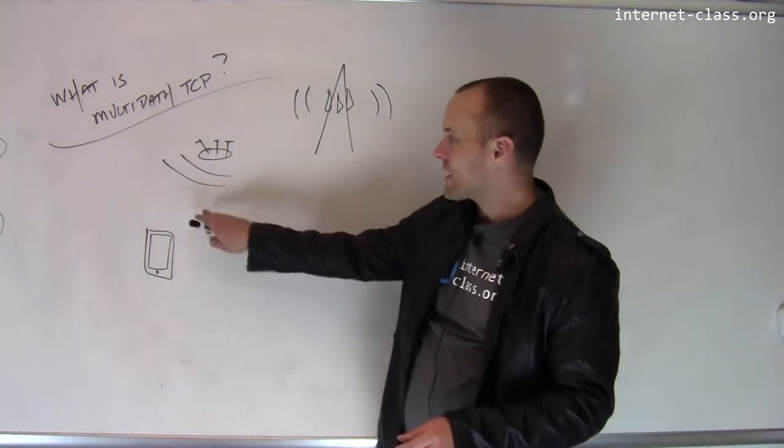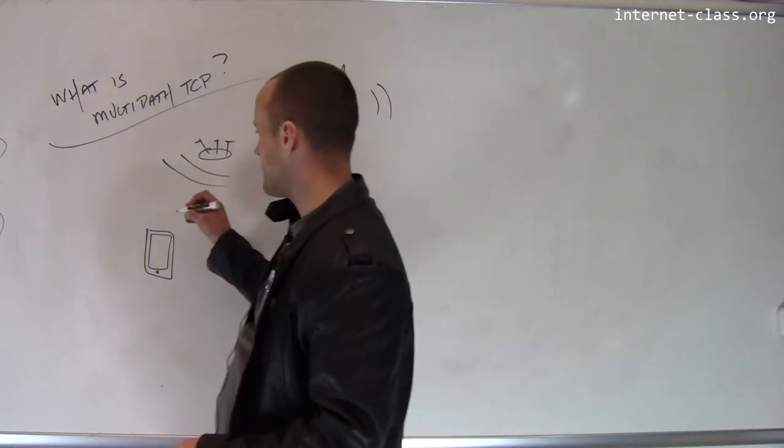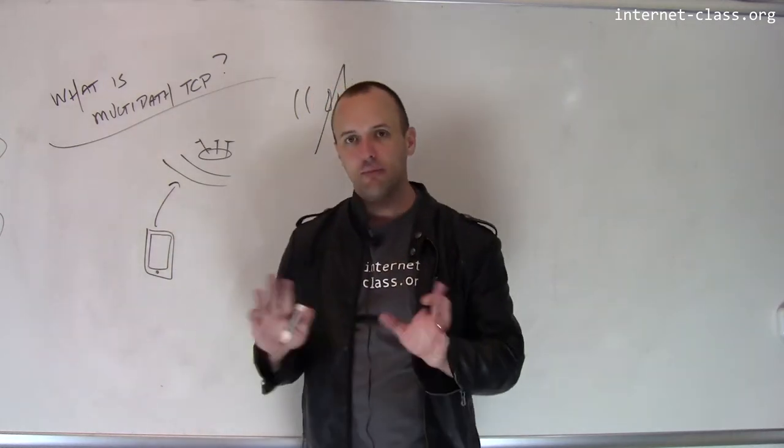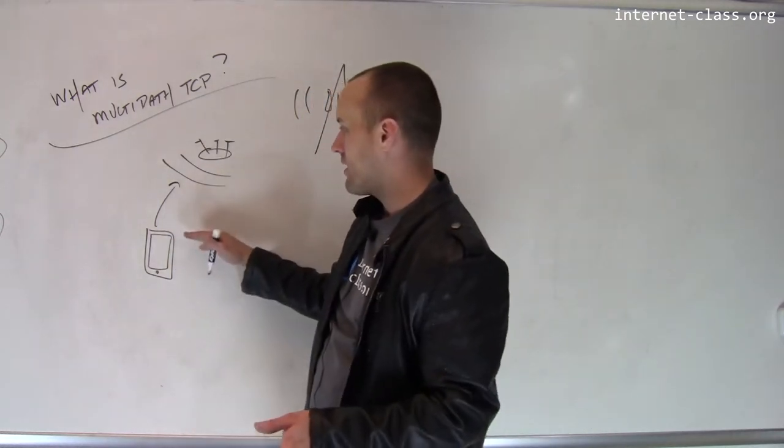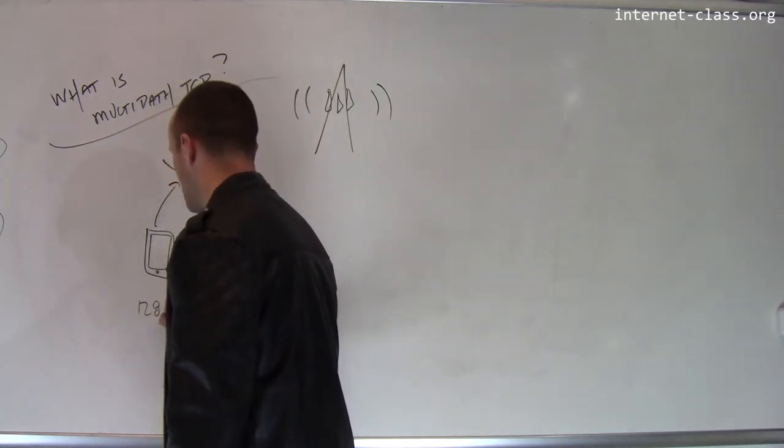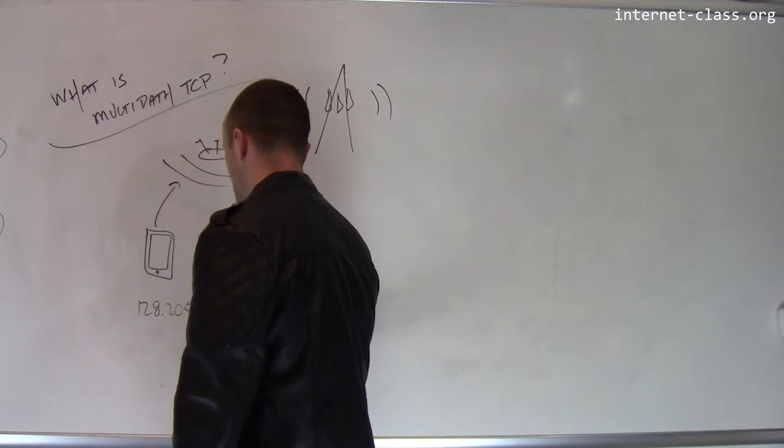So when you're connected via Wi-Fi, let's say you're on Ubi's network, your device, like other devices on the internet, has an IP address and any connections that you make are tied to that IP address. So that IP address might be something like 128.205.43.10 or whatever.